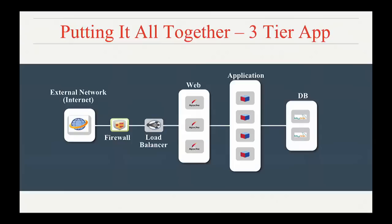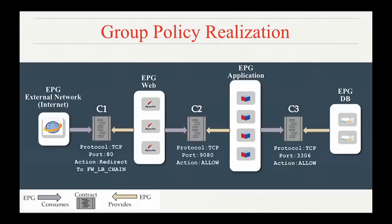Mapping to the three-tier use case Mohamed described earlier: at each layer you see contracts C2 and C3. For access from the outside world to the web server tier, we open port 80, but the action is to redirect through a firewall and load balancer chain before it hits the web server tier. That is all you need to express as intent for the connectivity you want to achieve.